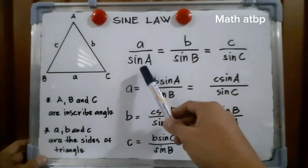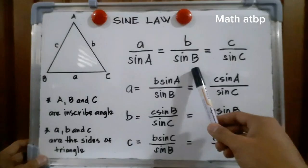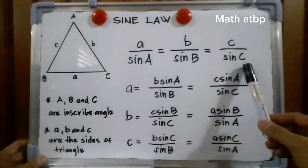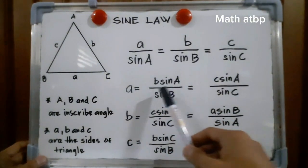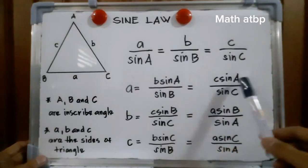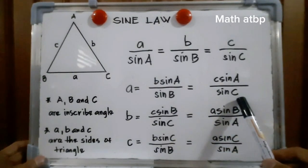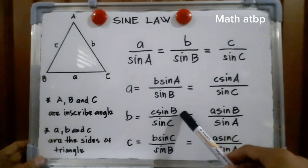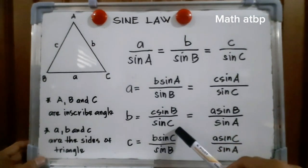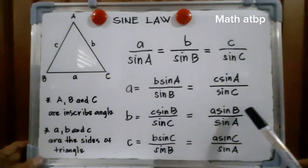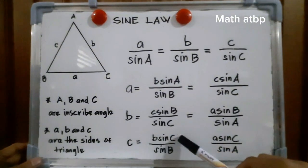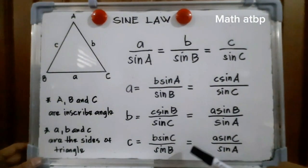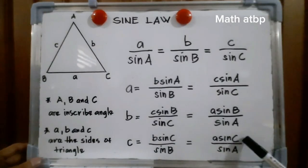Sine law states that A over sine A is equal to B over sine B, and it is also equal to C over sine C. From this, side A is equal to B times sine of A divided by sine of B, and also equal to C times sine of A divided by sine of C. Side B is equal to C times sine of B divided by sine of C, and also equal to A times sine of B divided by sine of A. Side C is equal to B times sine of C divided by sine of B, and also equal to A times sine of C divided by sine of A.